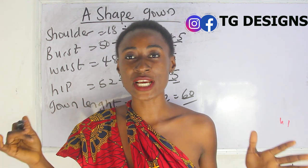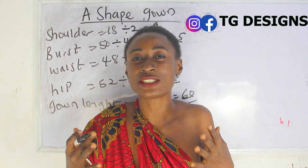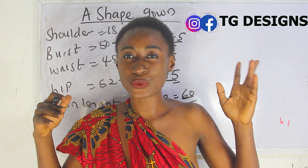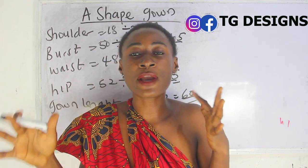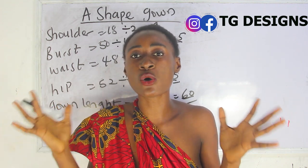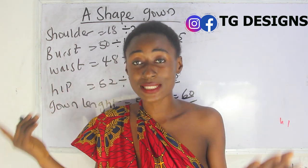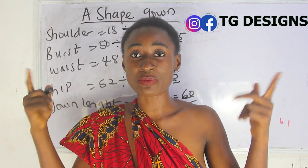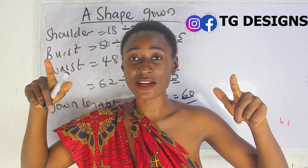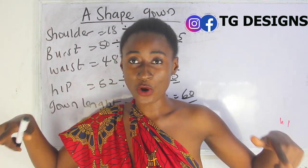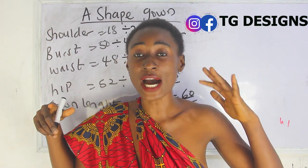For your maxi dress, it all depends on how free you want it to be. Some people want it fitted around the bust and waist area and a little bit free around the hip. From the style name A-shape, it means you'll have that A effect — your bust and waist area are a little bit fitted while the hip area flares out like the letter A.